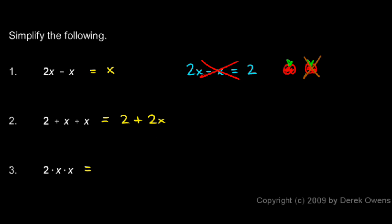And in number 3, 2 times x times x—these are all multiplied together. The 2 stays, and then the x times x becomes an x squared, and those are multiplied together. 2 times x times x is 2 times x squared.